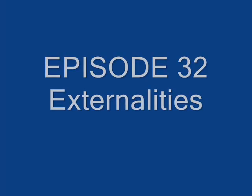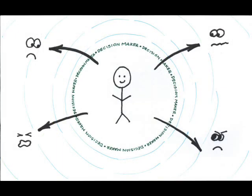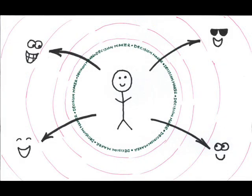Externalities occur when costs or benefits accrue to a person or persons who are not involved in the decision-making process. Note that externalities can involve either third-party costs—this would be a negative externality—or third-party benefits—this would be a positive externality. Let's address each of these in turn.